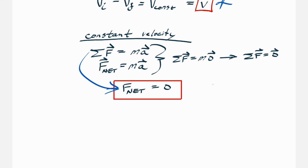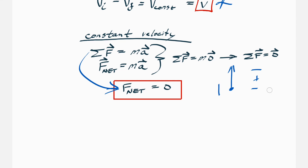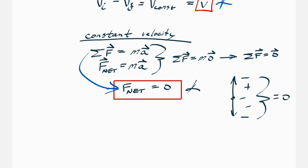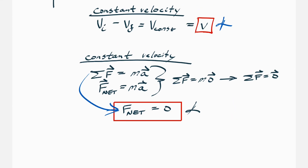What this means is that whatever forces are acting on an object, they balance each other out — there's no net force. For instance, if you have a force pointing up and a force pointing down, for constant velocity motion those forces must be equal, so they cancel to zero. We'll talk more about forces in detail later.